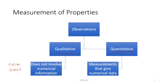or it could even describe the appearance of a product that you create. Quantitative information are measurements that give you numerical data. For example, you could measure the mass of something, you could measure the volume, or you could take the temperature. All of those are quantitative measurements that you could be taking in the lab.